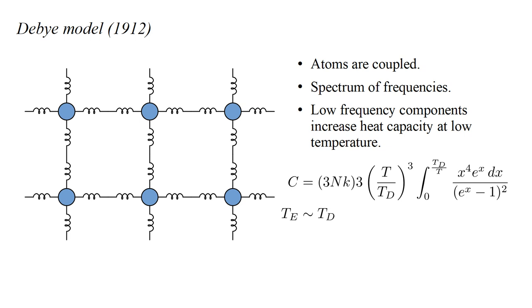Calculation of the heat capacity is lengthy, and we simply present the result. C equals three NK times three, quantity T over T_D cubed, times the integral from x equals zero to T_D over T, of x to the fourth e to the x over quantity e to the x minus one squared. Here T_D is the Debye temperature, which is on the order of the Einstein temperature. It is often determined experimentally.